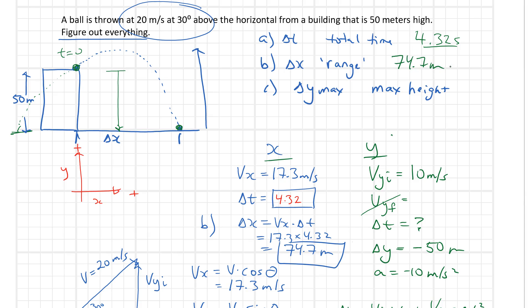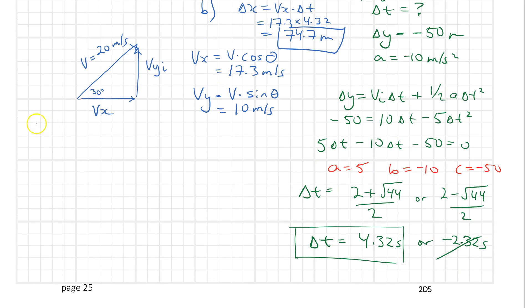Now the last one is delta y, what's the maximum height? Looking at C, that maximum height, I'm going to redraw our diagram. We're just interested in this spot and then this spot. We don't really care about the rest of it. What do we know here? We know that vyi was still our 10 meters per second. We know that the acceleration is minus 10 meters per second. What we're interested in is what's the delta y, what's the change in this? We don't know the time. I think we know that the final velocity in the vertical direction would be equal to zero.